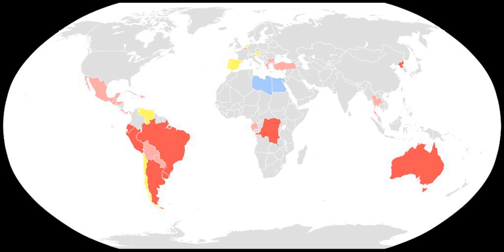Compulsory voting is an effect of laws which require eligible citizens to register and vote in elections, and may impose penalties on those who fail to do so. As of August 2013, 22 countries provide for compulsory voting, and 11 democracies—about 5% of all United Nations members—enforce it.